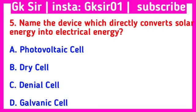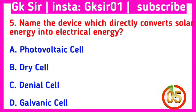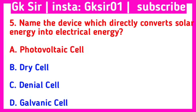Question number 5. Name the device which directly converts solar energy into electrical energy. Option A: photovoltaic cell, Option B: dry cell, Option C: Daniel cell, Option D: galvanic cell. The correct answer is Option A: photovoltaic cell.